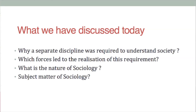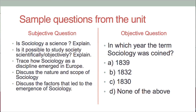From today's discussion, we have tried to understand why a separate discipline was required to study society, which forces led to the realization of this requirement, what is the nature of sociology, and what is its subject matter. Some possible exam questions from this unit include: Is sociology a science? Is it possible to study society scientifically or objectively? Trace how sociology as a discipline emerged in Europe. Discuss the nature and scope of sociology. Discuss the factors that led to the emergence of sociology. Objective type questions may include: in which year was the term sociology coined. With this, we conclude today's discussion on Unit 1.